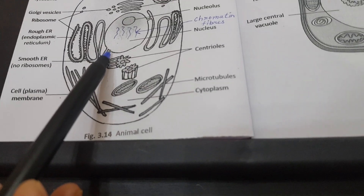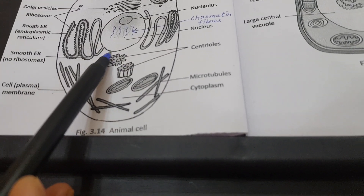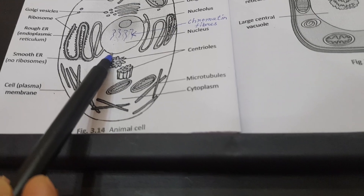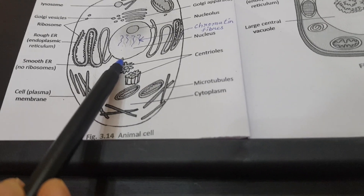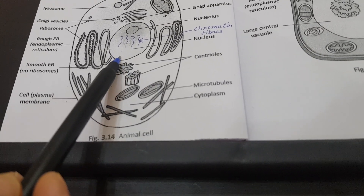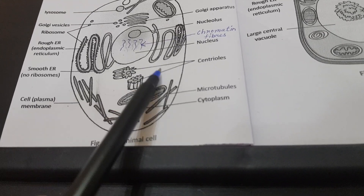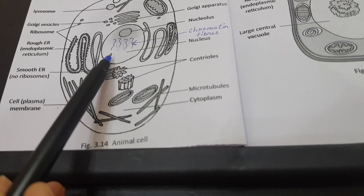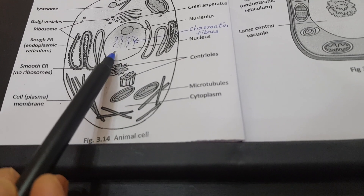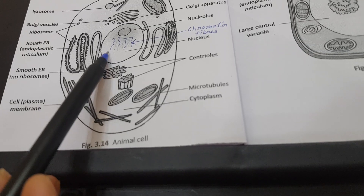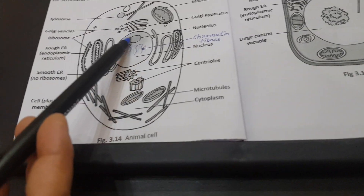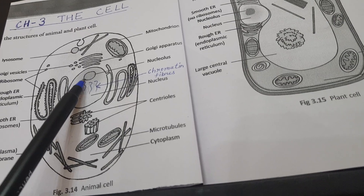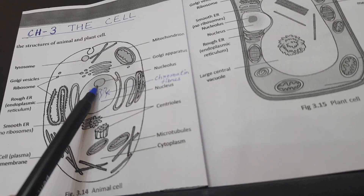This nucleus has a membrane called the nuclear membrane. The nuclear membrane has pores so that it can exchange materials with the cytoplasm. Inside the nuclear membrane is the nucleoplasm, that is a liquid, and inside the nucleoplasm there is a spherical structure called the nucleolus.